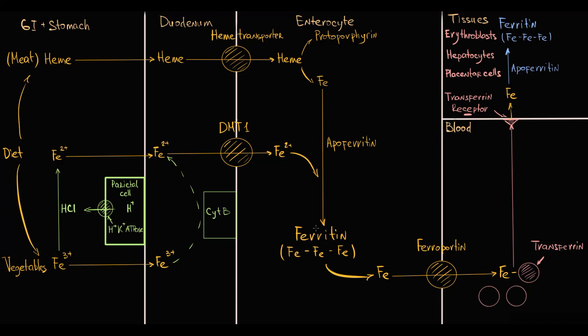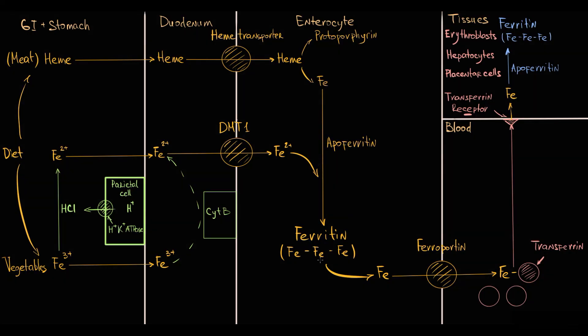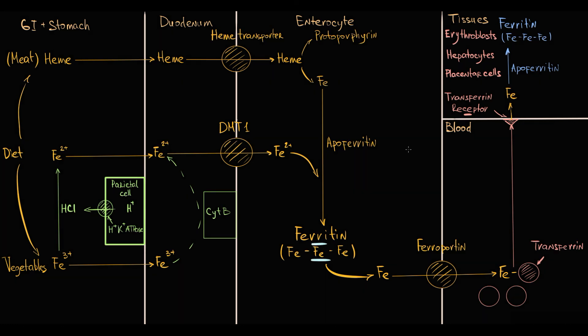And the most interesting thing is that as we see, iron is always bound to proteins. In our tissues, iron is bound to ferritin. In our blood, iron is bound to transferrin. In our macrophages, as we'll see further, iron is bound to hemosiderin. So iron is always bound.